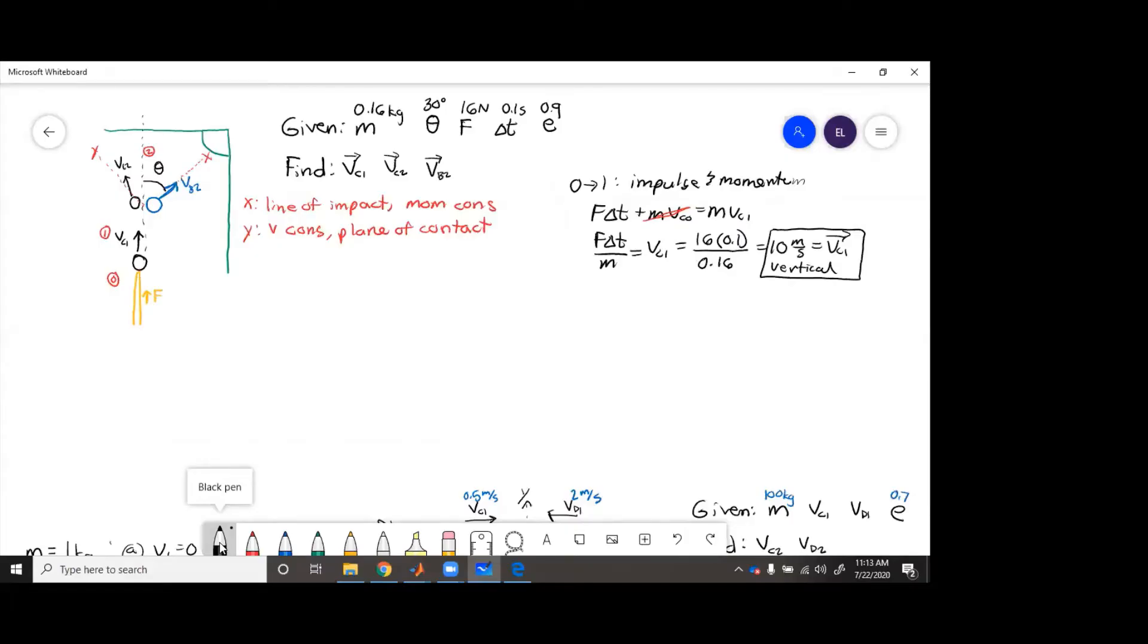Okay, so not too bad. Now we know vc1, we can use the vector components x and y with the oblique collision equations and then find vc2 and vb2.